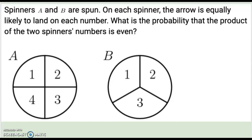We're going to take a look at this sample problem. In this problem, spinners A and B are both spun. On each spinner, the arrow is equally likely to land on any number. What is the probability that the product of the two spinners' numbers is even? Go ahead and jot down these spinners in your notebook, and then we're going to take a look at how to put together an array of the possibilities.